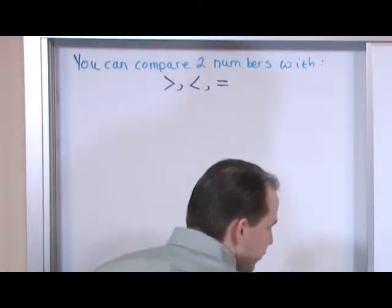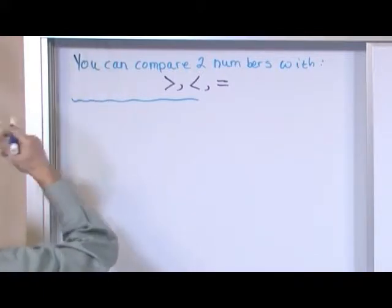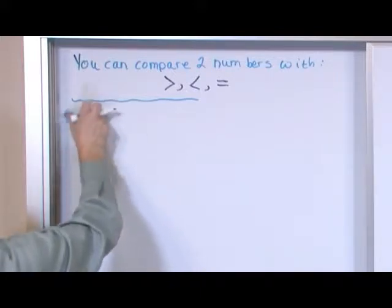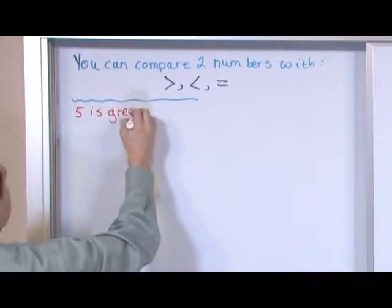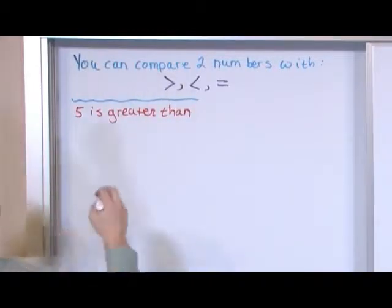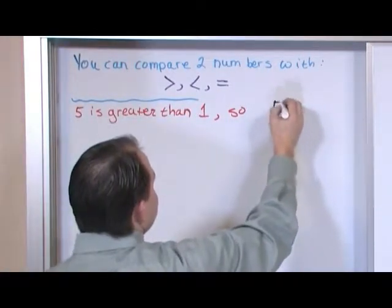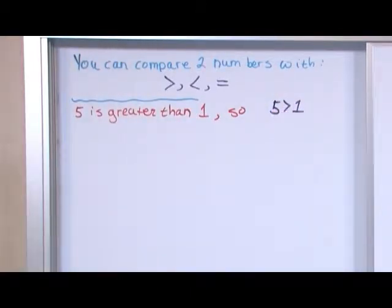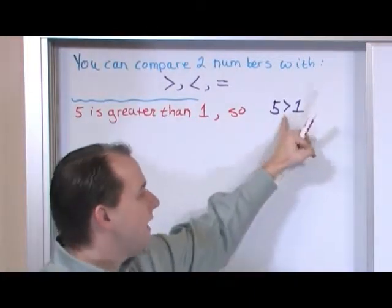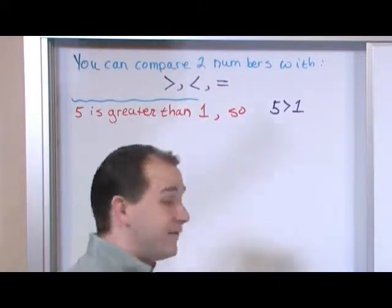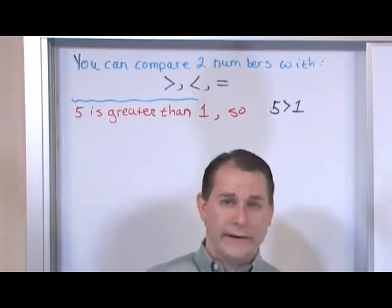The easiest way to do this is just doing a lot of examples, and you'll find out that it's really simple. So let's look at this: the number five is greater than one. That's how you write it — five is greater than one. Here's what you do, and it's very simple once you have it explained: the arrow always points to the smaller number. Always, always, always.